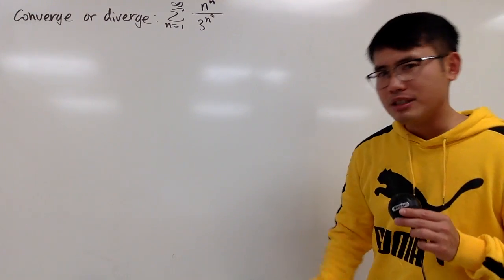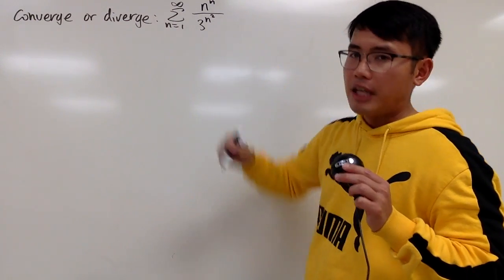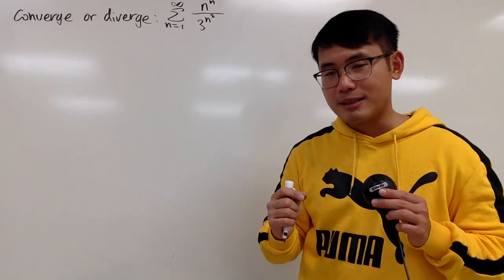It seems pretty crazy, but it's not that bad at all, because we notice this power is n, and this power is n squared, namely n times n. So the top and bottom, they both have n for the exponent.